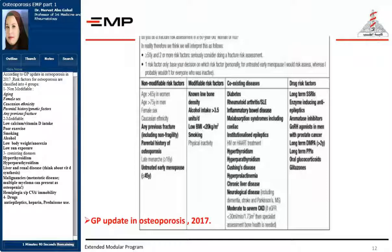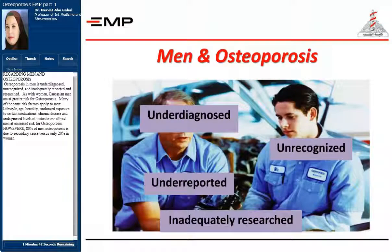The fourth group of risk factors includes drugs like antiepileptics, heparin, and prednisone. Regarding men and osteoporosis, osteoporosis in men is underdiagnosed, unrecognized, inadequately reported, and researched. As with women, Caucasian men are at greater risk. Many of the same risk factors apply to men, like lifestyle, age, hereditary factors, prolonged exposure to certain medications, chronic disease, and low testosterone levels, all of which put men at increased risk. However, 80% of men's osteoporosis is due to secondary causes, versus only 20% in women.